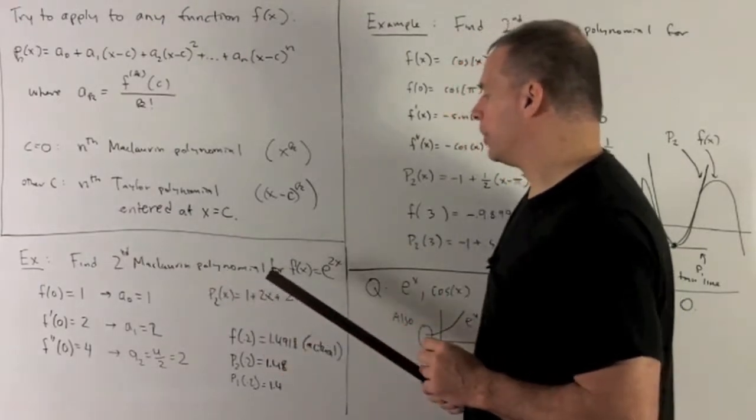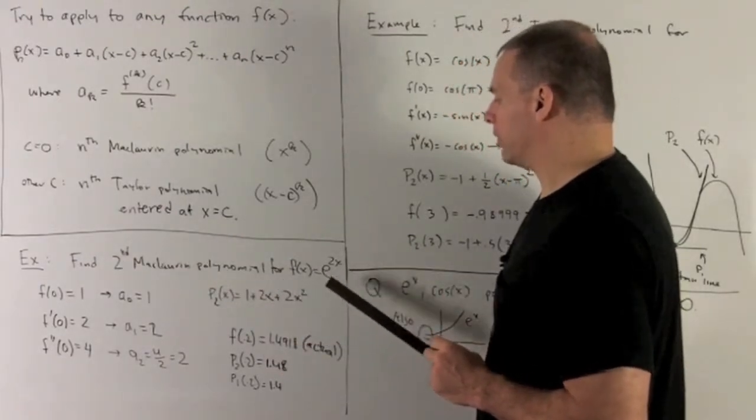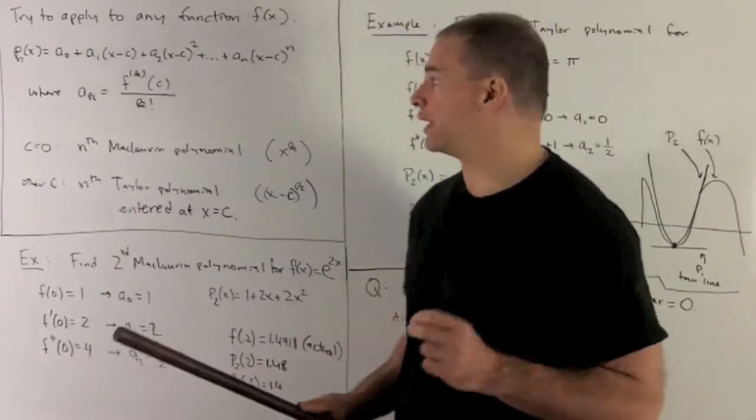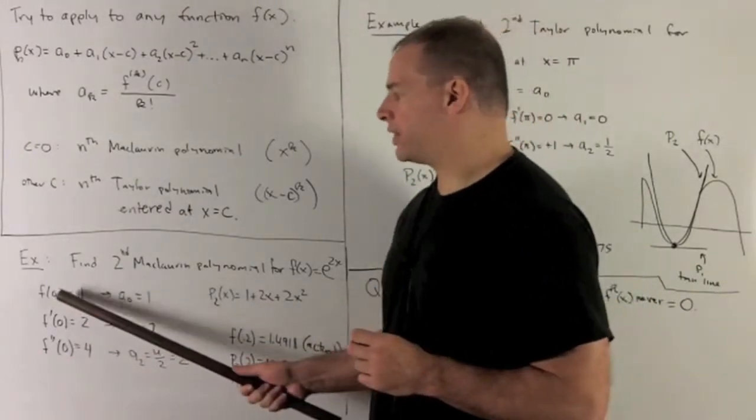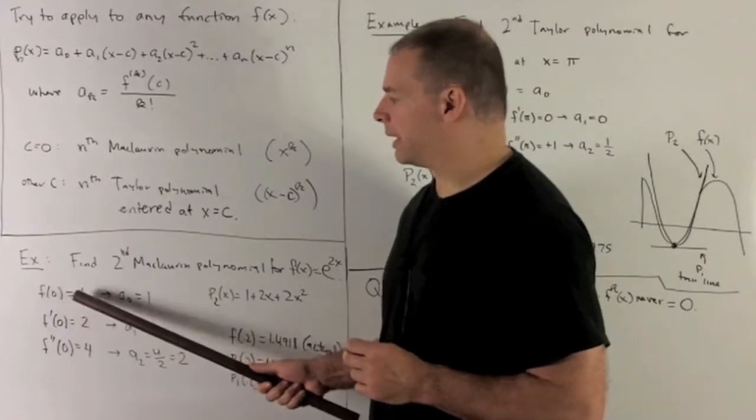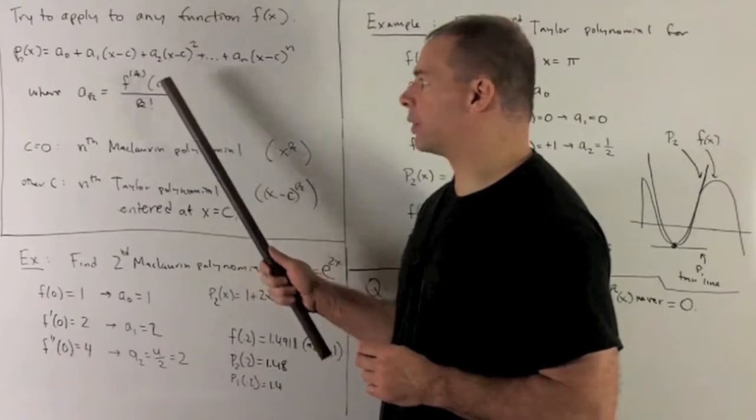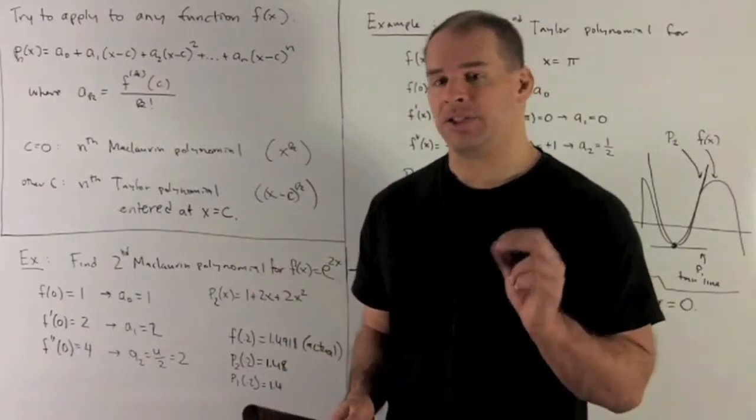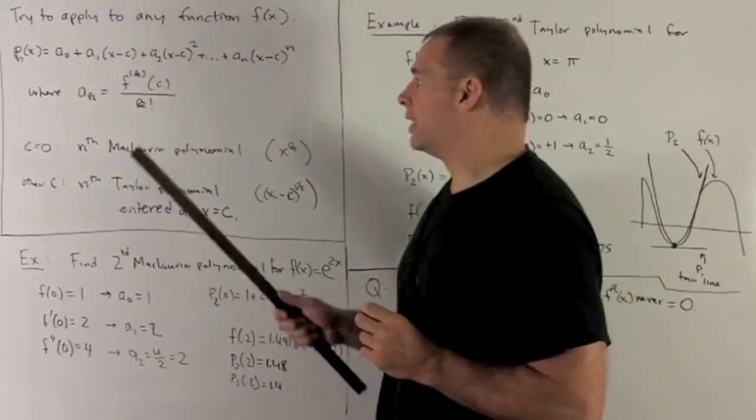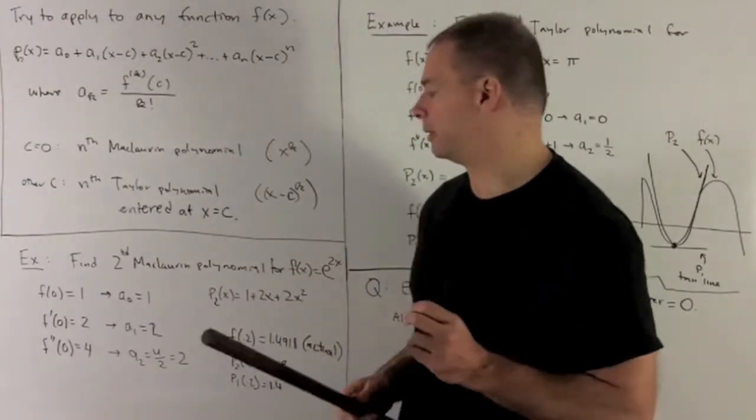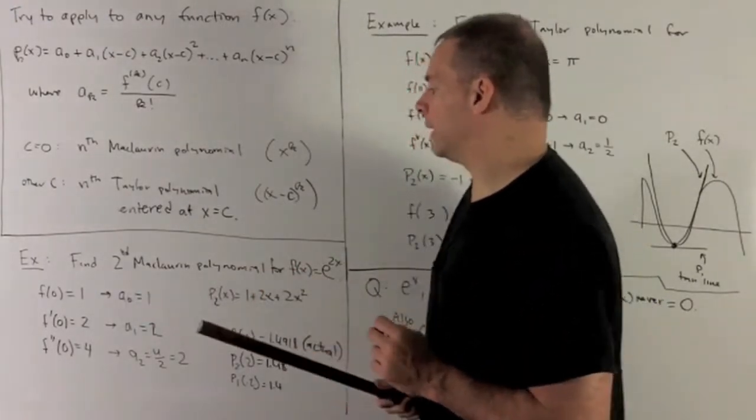Find the second Maclaurin polynomial for f(x) equal to e raised to the 2x. So we're just going to follow our nose with the definition. f(0) is going to be equal to 1. And so we have here a sub 0 equals f(0). Just remember, the 0th derivative is just the function itself. 0 factorial, that's defined to be exactly 1. So our a₀ is going to be equal to 1.